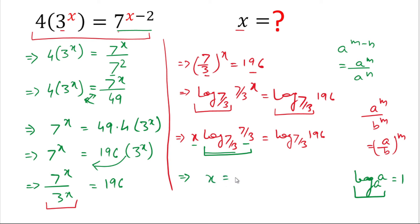So it is x. We can write x equals, in the right hand side we can write log 196 divided by log 7 minus log 3.